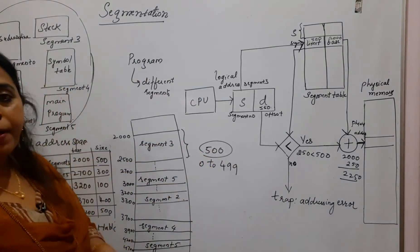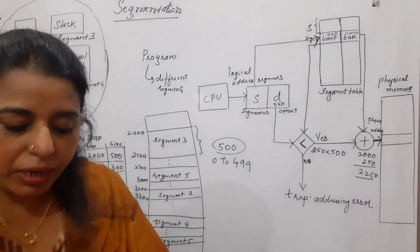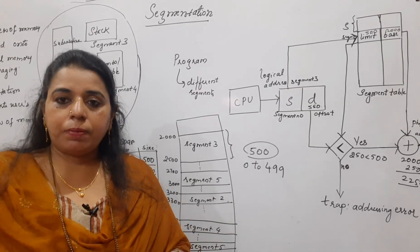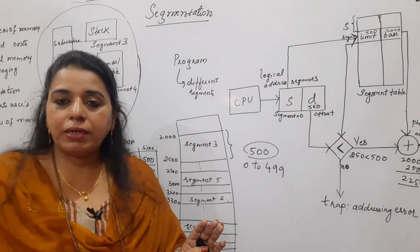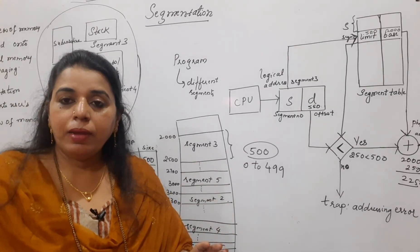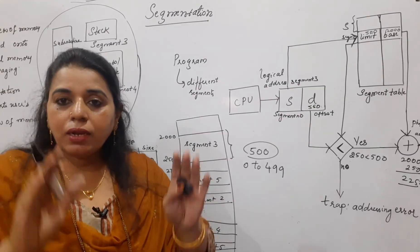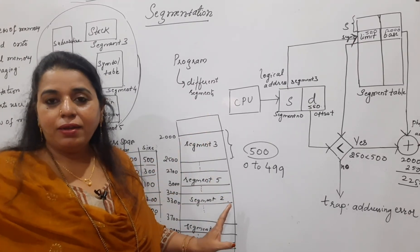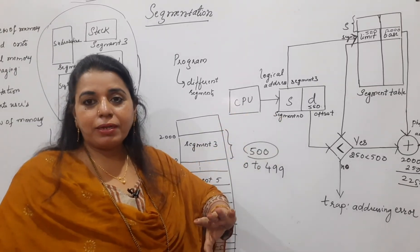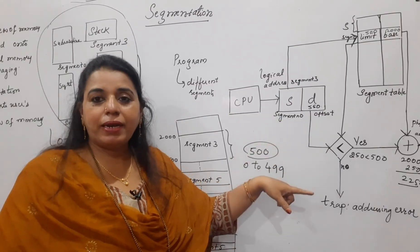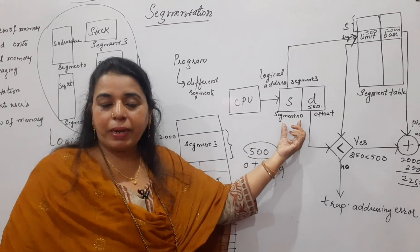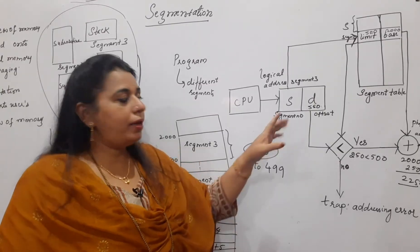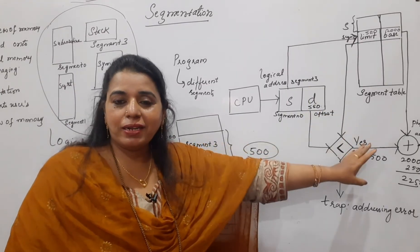This is the difference between paging and segmentation. Paging divides a process into equal-size partitions called pages placed in main memory. In segmentation, you do not divide memory into equal partitions. Instead, from the user's point of view, if a program has five segments, you can see in the main memory exactly where each segment is placed. The logical address in paging has a page number and offset; in segmentation it has a segment number and offset, searched in the segment table.